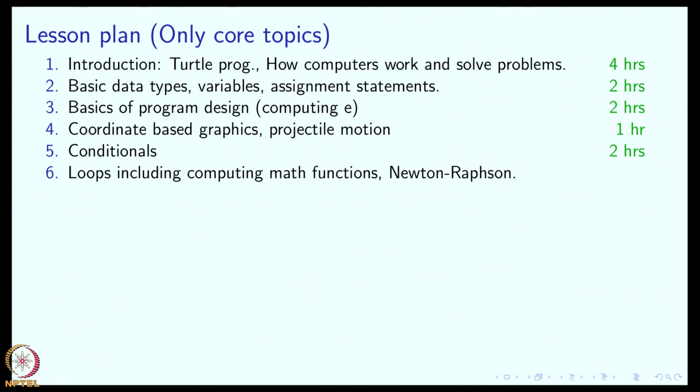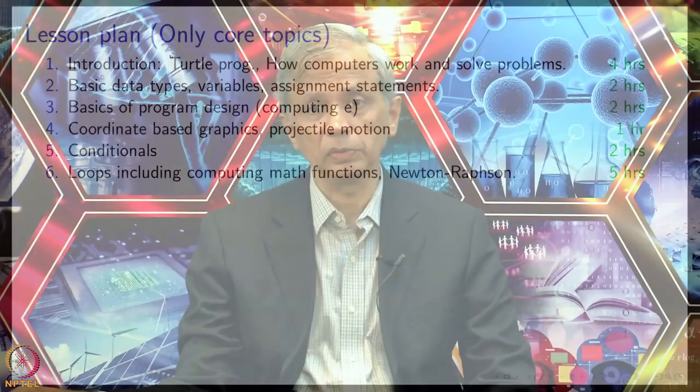After that, we will talk about conditionals, which will take two hours, and there will be loops after that—standard loops—and they will include how to compute math functions. E is only one example, but we will talk about other math functions as well, and we will talk about things like the Newton-Raphson method for finding roots. We will also talk about style issues: when should you use a for loop, when should you use a while loop, and things like that. That will take about five hours. Then we will talk about functions, including recursion and including arguments for correctness.